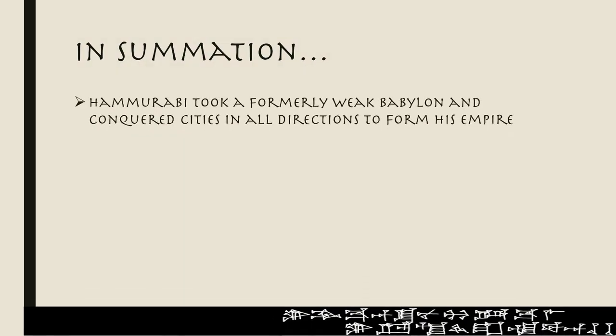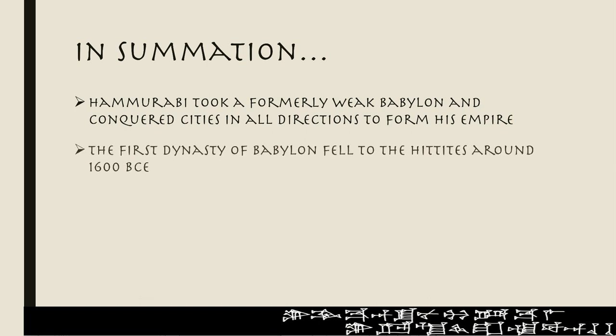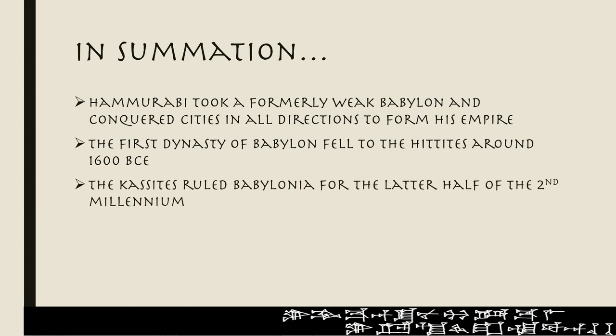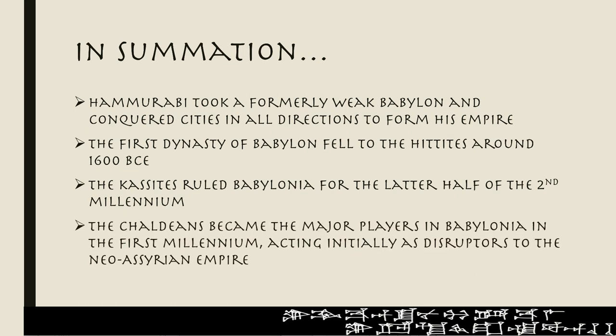In summation: Hammurabi took a formerly weak Babylon and conquered cities in all directions to form his empire at the end of the first quarter of the second millennium. The first dynasty of Babylon fell to the Hittites around 1600. The Kassites, following a dark age, ruled Babylonia for the latter half of the second millennium. Coming into the first millennium, the Chaldeans became the major players in Babylonia, acting initially as disruptors to the Neo-Assyrian Empire.